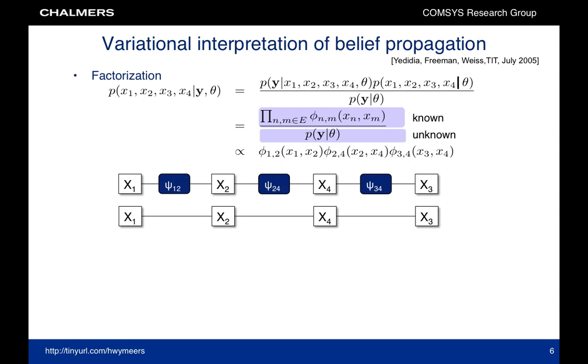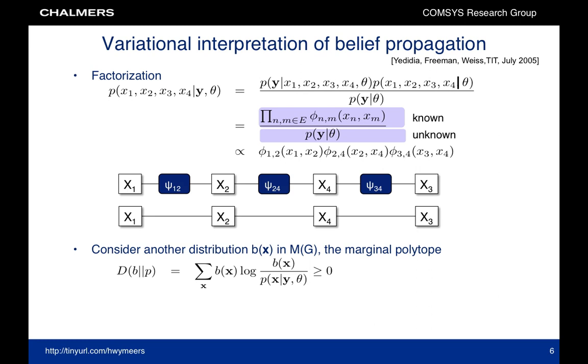From this factorization we can draw a factor graph or a Markov random field. Now we can consider another distribution b that factorizes in the same way, or equivalently belonging to the so-called marginal polytope, and compute the KL divergence to the true posterior. Recall that we can only compute the true posterior up to a normalization constant. After some straightforward manipulation we find the following optimization problem, where the log partition function is found by maximizing an objective function involving the entropy of the trial distribution b, and a cross term that is linear in b. The optimization occurs over the marginal polytope.